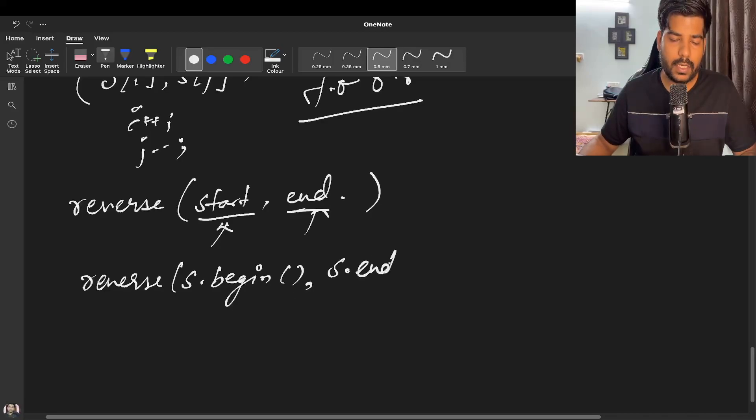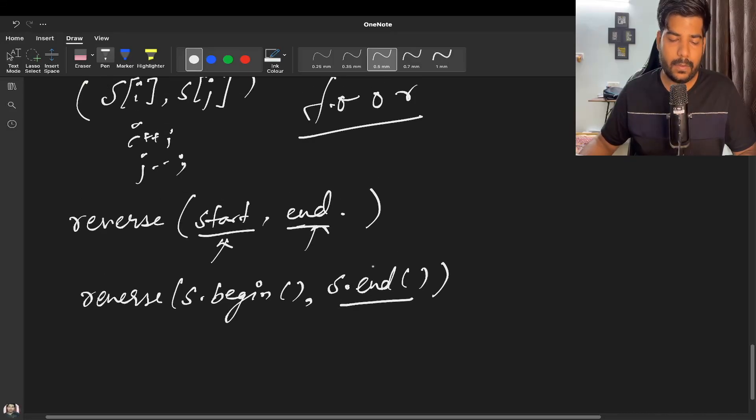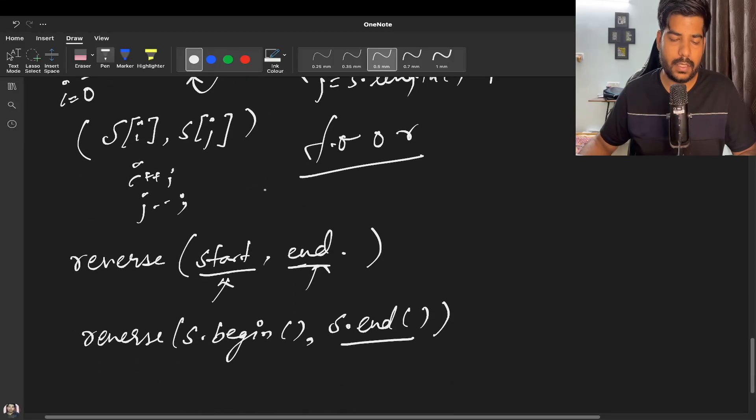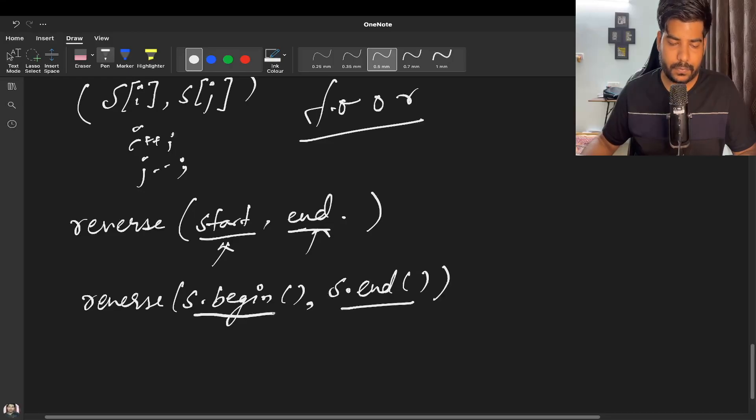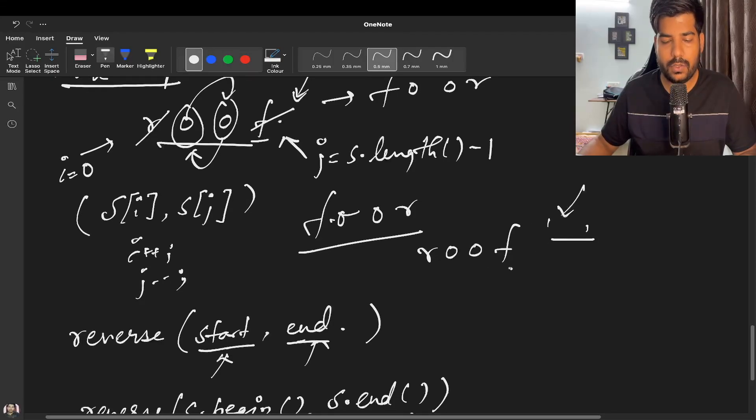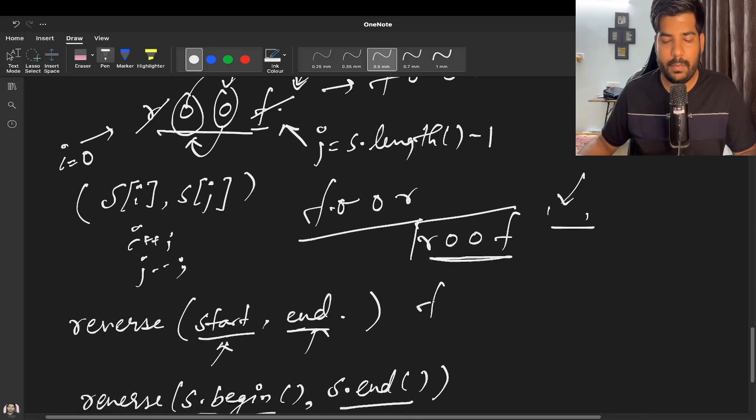This is not included - s.end indicates the character after the last character of the string. It will reverse all the characters before this. So if we have 'roof' and s.end is pointing after it, every part of the string before this will be reversed, so 'roof' becomes 'foor'.